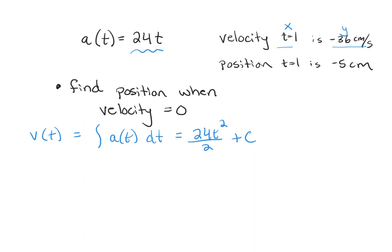Plugging in the initial condition — negative 36 equals 12 times one squared plus C — we get 12 minus 12, so C equals negative 48. The velocity function is therefore 12t squared minus 48.